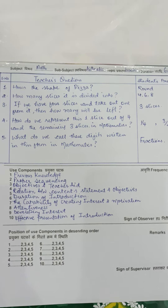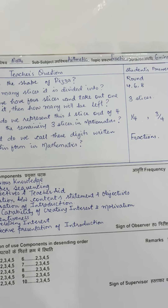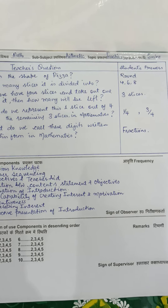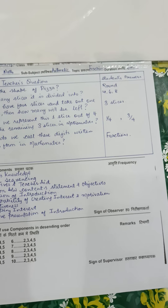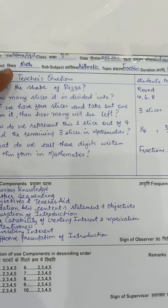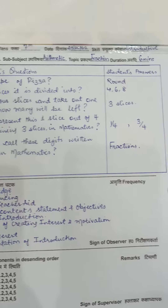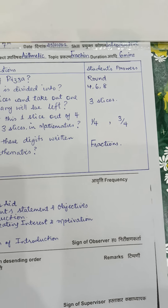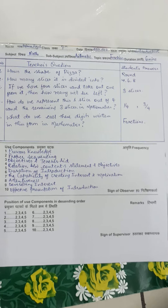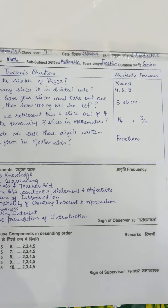These mini sheets are given during micro teaching in B.Ed first year, and the timing for this is only six minutes. This is for the subject of mathematics, the sub-subject is arithmetic, and the topic is fraction. The duration given for this micro teaching is six minutes. This is how the sheet looks like and we are going to begin now.